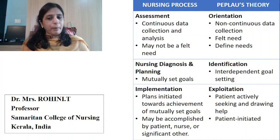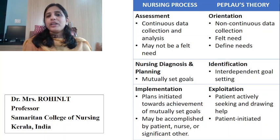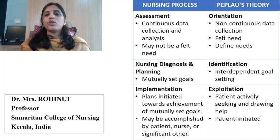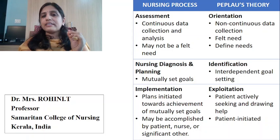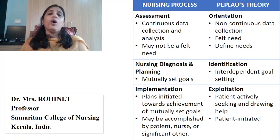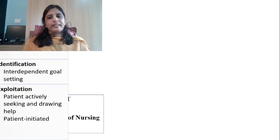The identification phase in Peplau's theory equals nursing diagnosis and planning. That phase and these steps go together — the felt need is written clearly, the nursing diagnosis is formed, and mutual goal setting occurs. The key point to remember in Peplau's theory is that the goal is always mutually set. The exploitation phase equals the implementation phase — all procedures, teaching, activities, taking vitals, administering medications, everything done for the patient falls under exploitation phase.